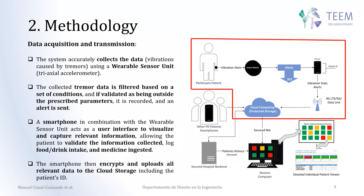The first stage, shown here with the red box, is related to data acquisition and transmission. The idea is that we will have a wearable sensory unit that will help us to collect data on the vibrations caused by the tremors. The wearable sensory unit will have a three-axis accelerometer. The collected data is filtered based on set conditions, and if these conditions are outside the prescribed parameters, they will be recorded and an alert will be sent.